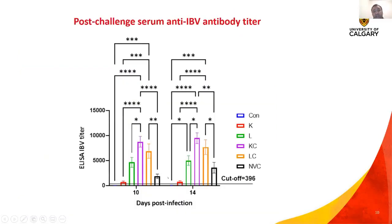For post-challenge serum anti-IBV antibody titer by ELISA: the control group did not exhibit serum anti-IBV antibody titers at 10 and 14 DPI. The serum anti-IBV antibody titer in the two vaccinated challenge groups was significantly higher when compared to the vaccinated non-challenged group. Most notably, the serum anti-IBV antibody titer in the two vaccinated challenge groups was significantly higher when compared to the NVC group at both time points — 10 and 14 DPI.